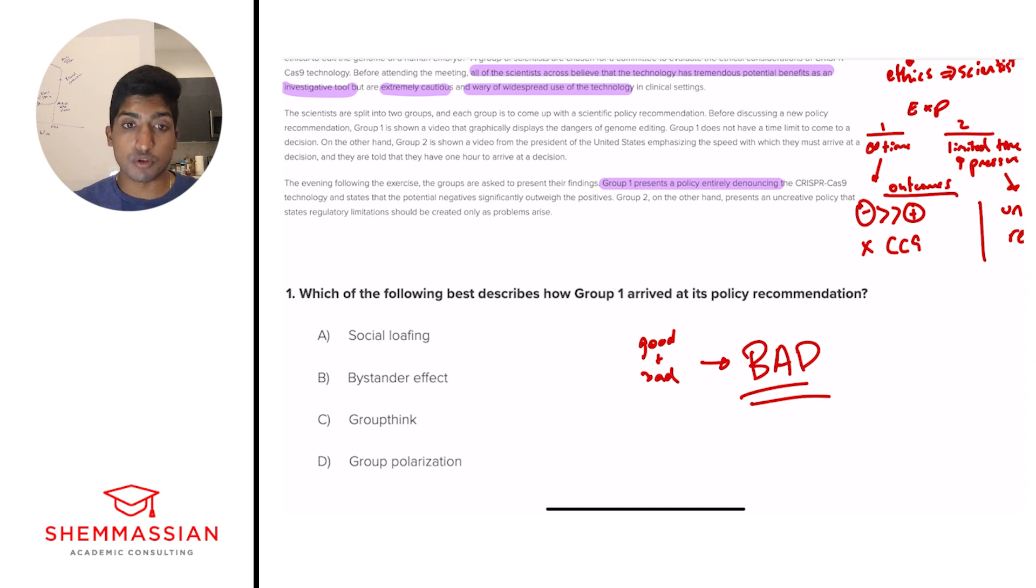Is it social loafing? No. What does social loafing mean? Social loafing means when you're in a group setting, your group members start to slack. An individual might start to slack because they see all the work being done around them. B, bystander effect. This doesn't really make sense in the context of this. Bystander effect means that as we have more and more people outside watching an incident, no one's going to want to respond to this incident because they think someone else will jump in. So right away, we can eliminate A and B.